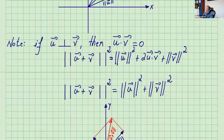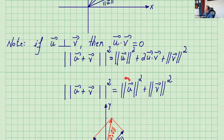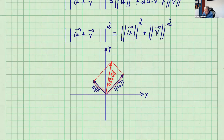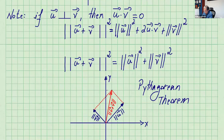There's an interesting special case. If u is perpendicular or orthogonal to v, then the dot product is zero, so the middle term 2(u dot v) equals zero. Therefore we are left with norm of u plus v squared equals norm of u squared plus norm of v squared. And that's exactly the Pythagorean theorem.